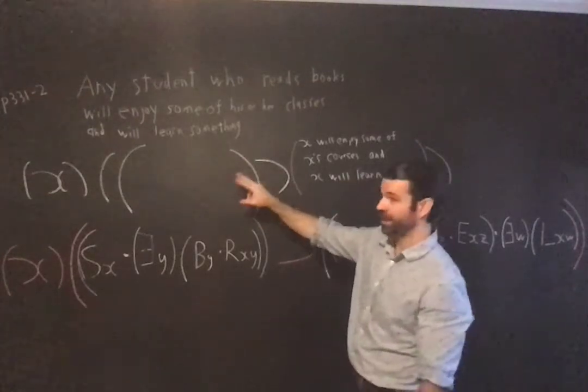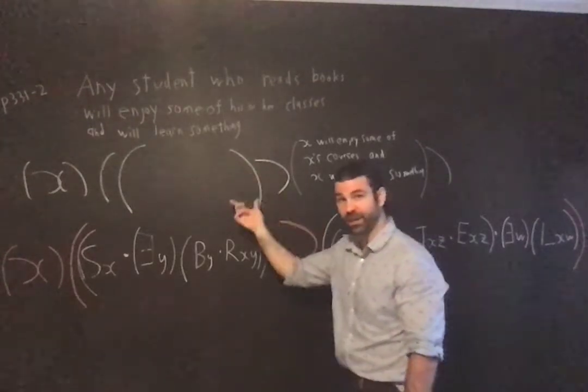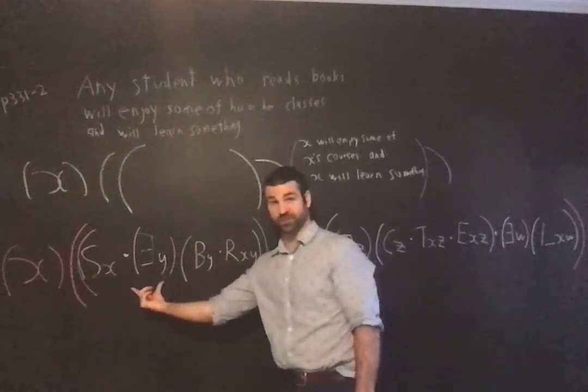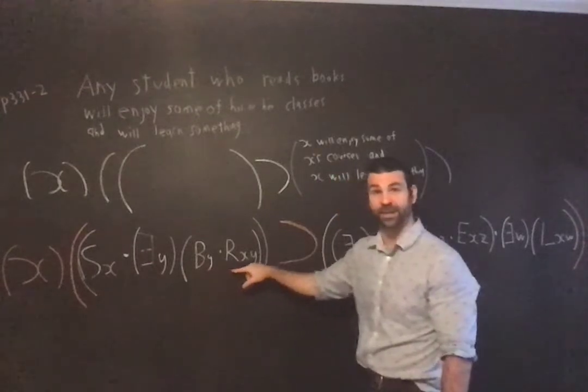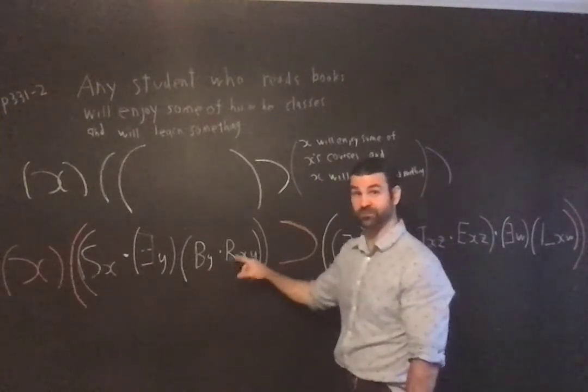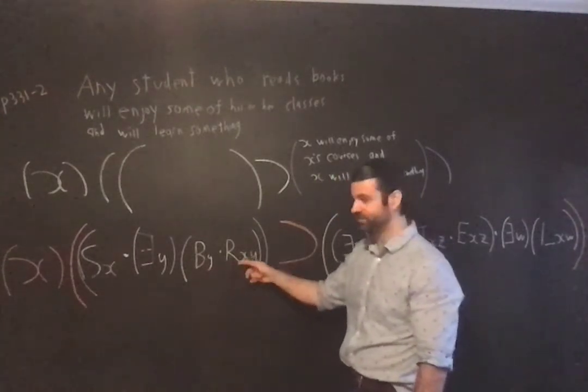X is a student and X reads books. X reads books received a quantifier. There exists a Y. Y is a book and stands in the relation of being read to X as it were.